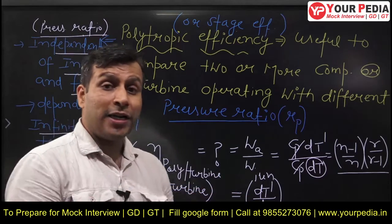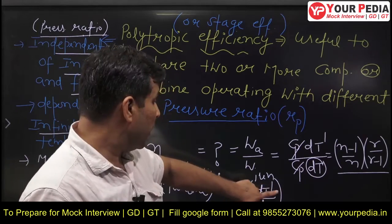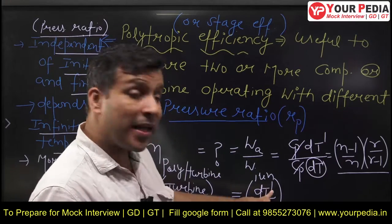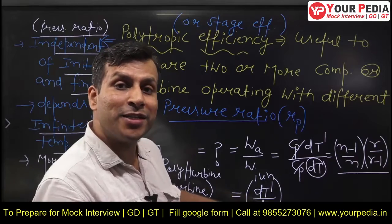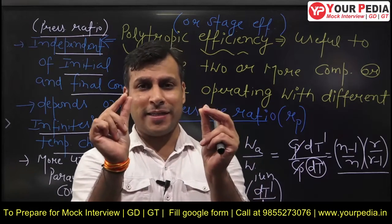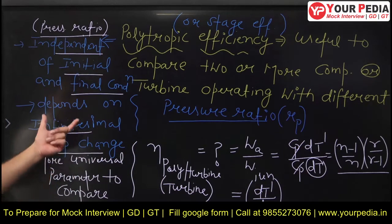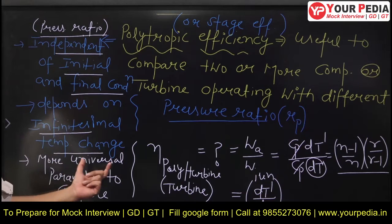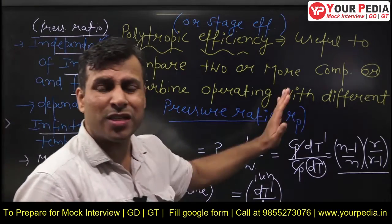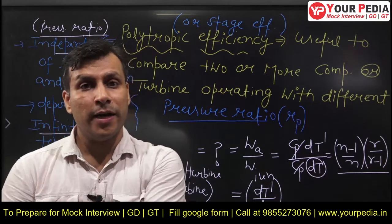Polytropic efficiency is independent of initial and final conditions, independent of the pressure ratio. It depends on the infinitesimally small temperature change. Polytropic efficiency does not depend on the total change like (final temperature minus initial temperature) - that is for isentropic efficiency where we wrote T1 − T2-dash over T1 − T2. But for polytropic efficiency, we take the infinitesimally small change in temperature: dT-dash / dT. This efficiency is represented for a small infinitesimal temperature change and is a more universal parameter compared to isentropic efficiency.